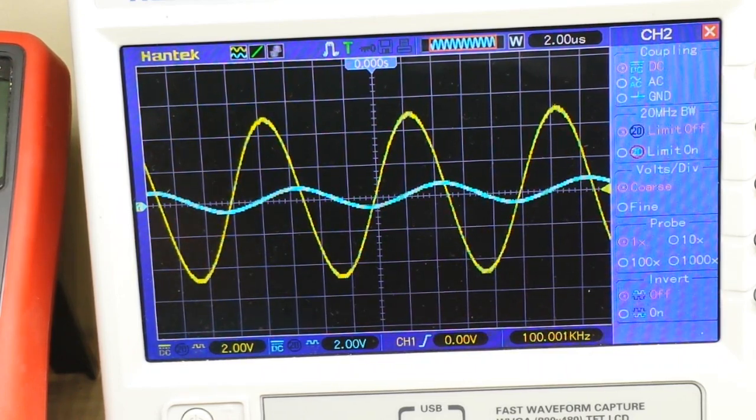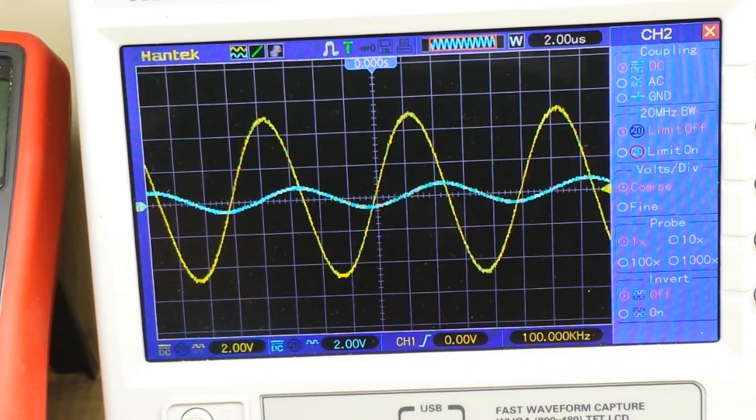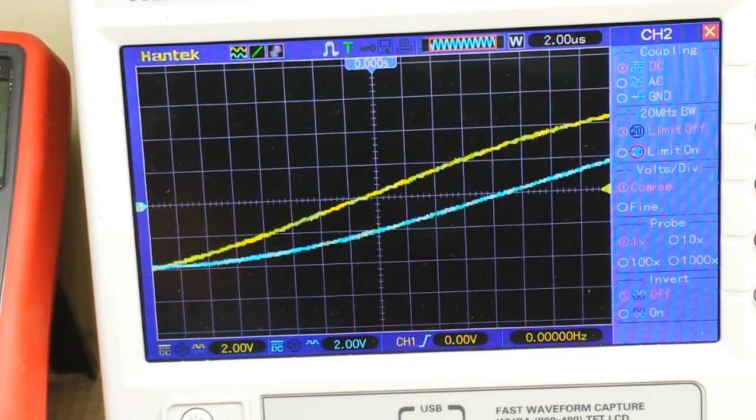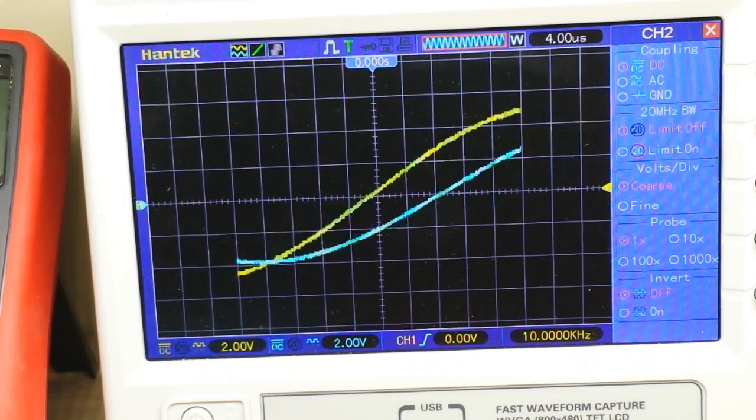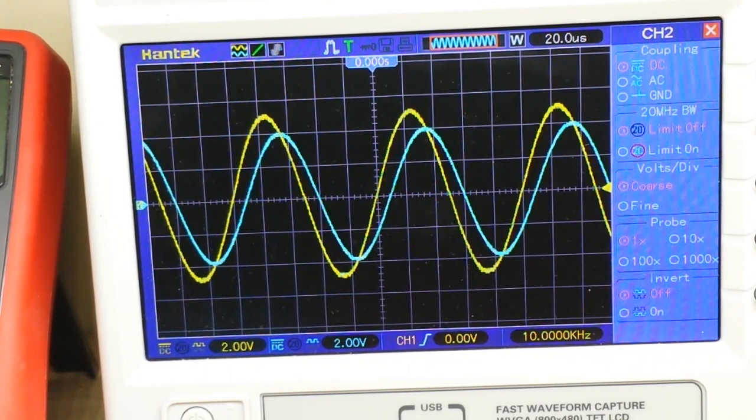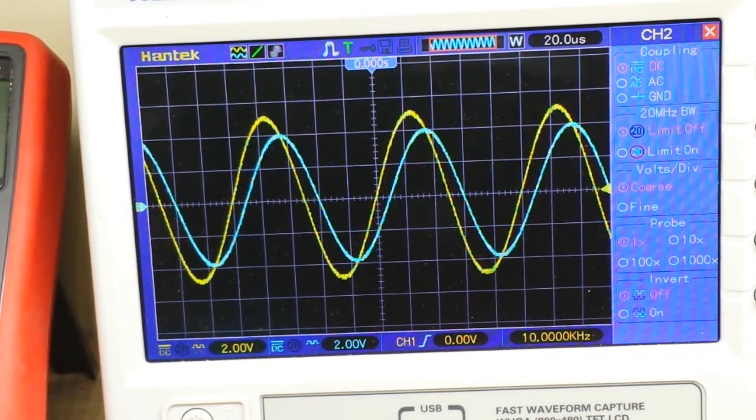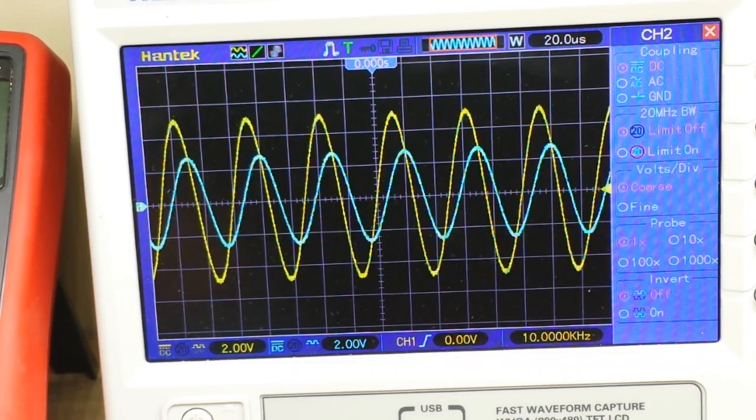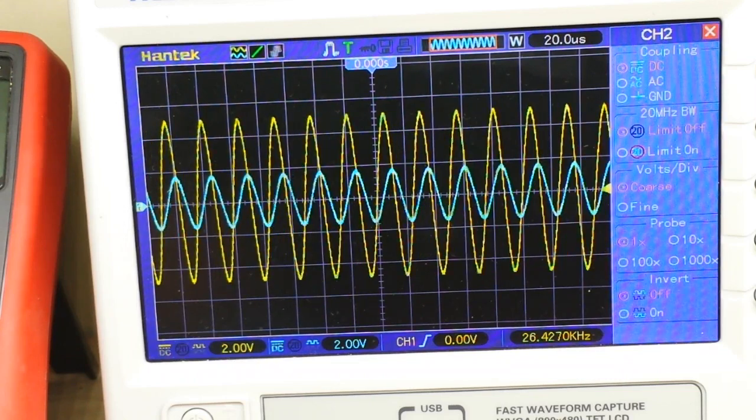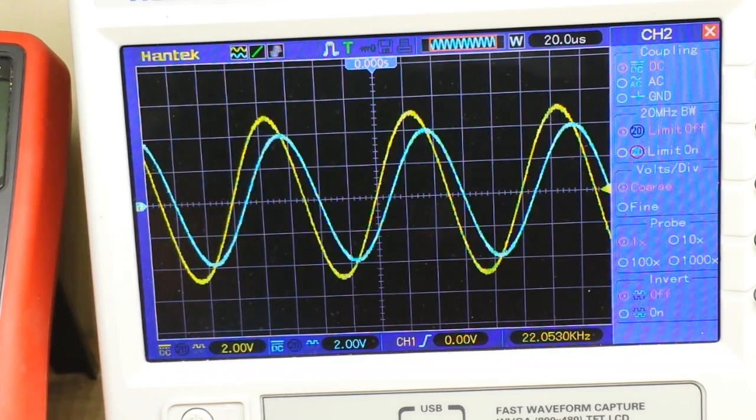So, let's go down at 50 kilohertz. You can see we're only slightly, oh, I'm sorry, that's 10 kilohertz. We're only slightly attenuated. 20, 30, 40. Alright, let's go back. We're at 10 kilohertz now.